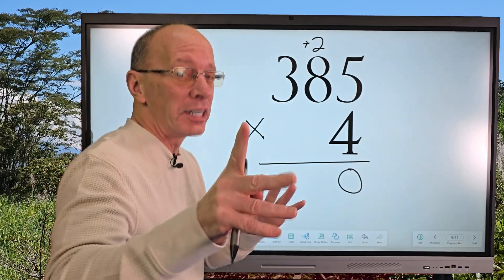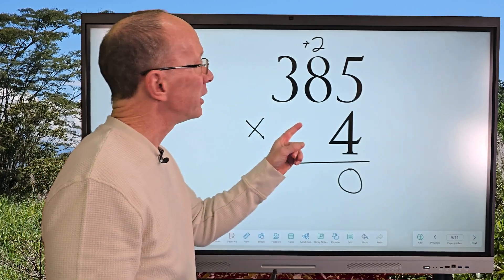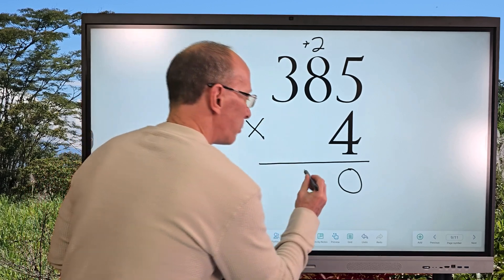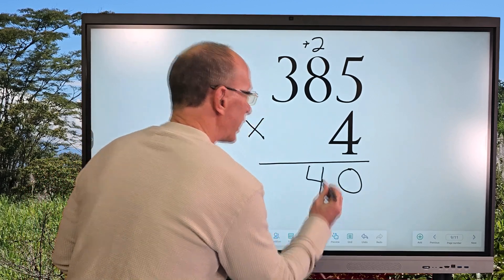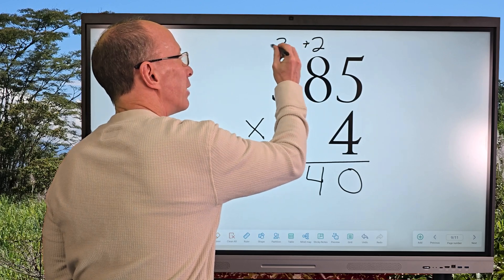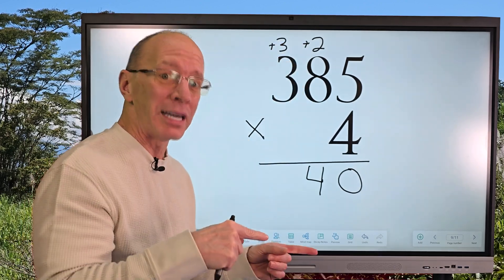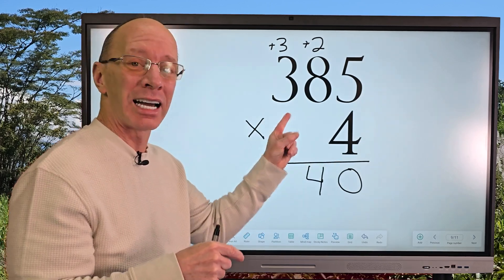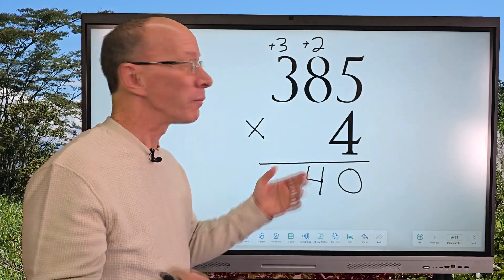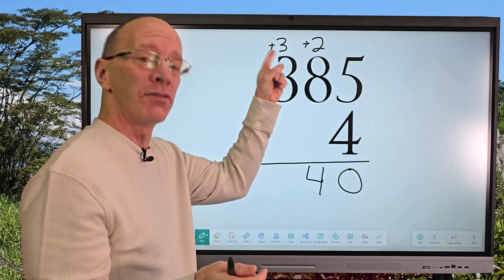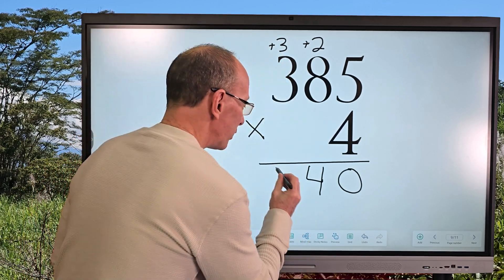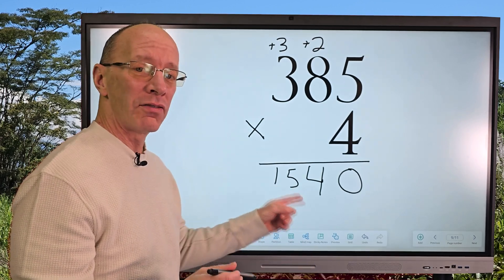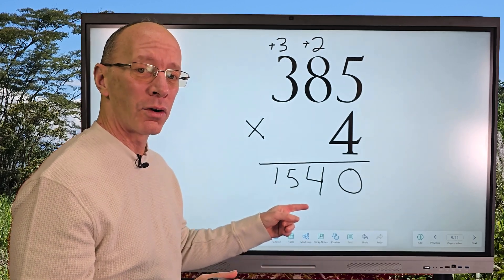Four times eight is thirty-two. Thirty-two plus two is thirty-four, so I put the four right here and carry that three up here — we'll add that three in a little bit. Now four times three equals twelve, and then twelve plus three is fifteen. So I put the one and the five here, and our answer is one thousand five hundred forty.